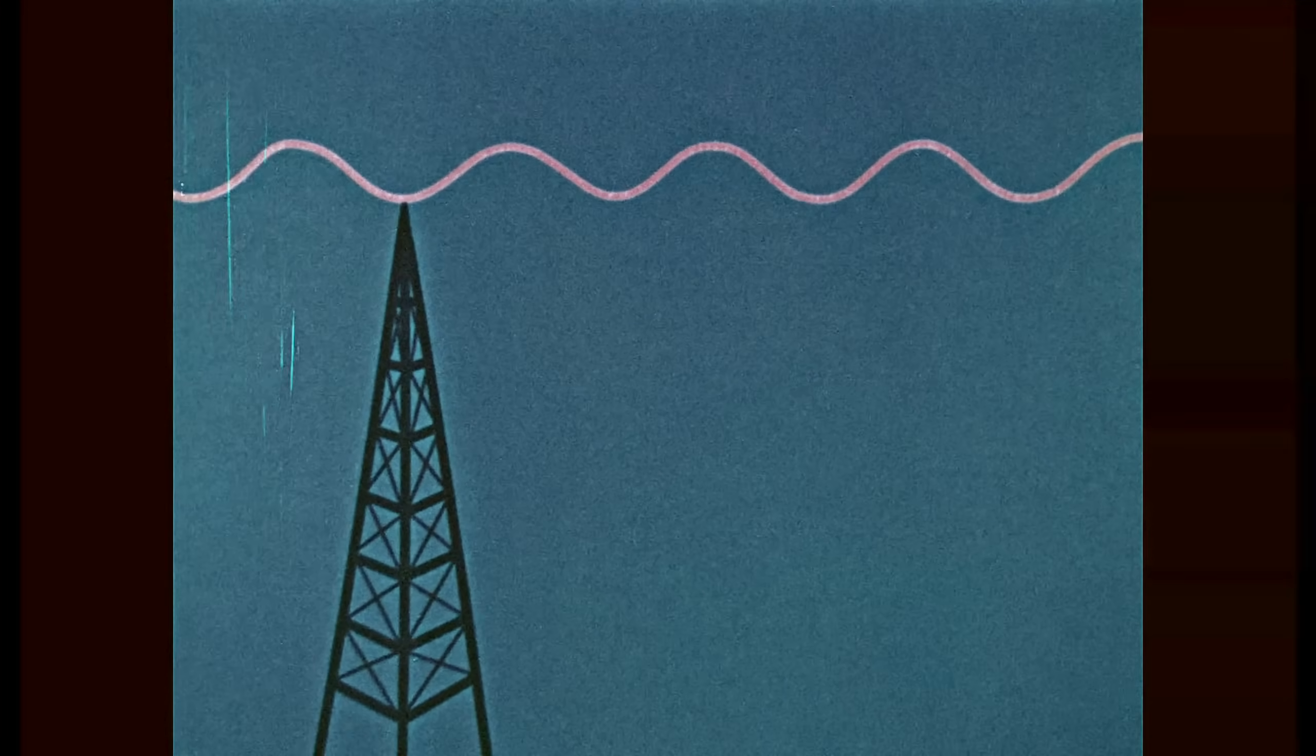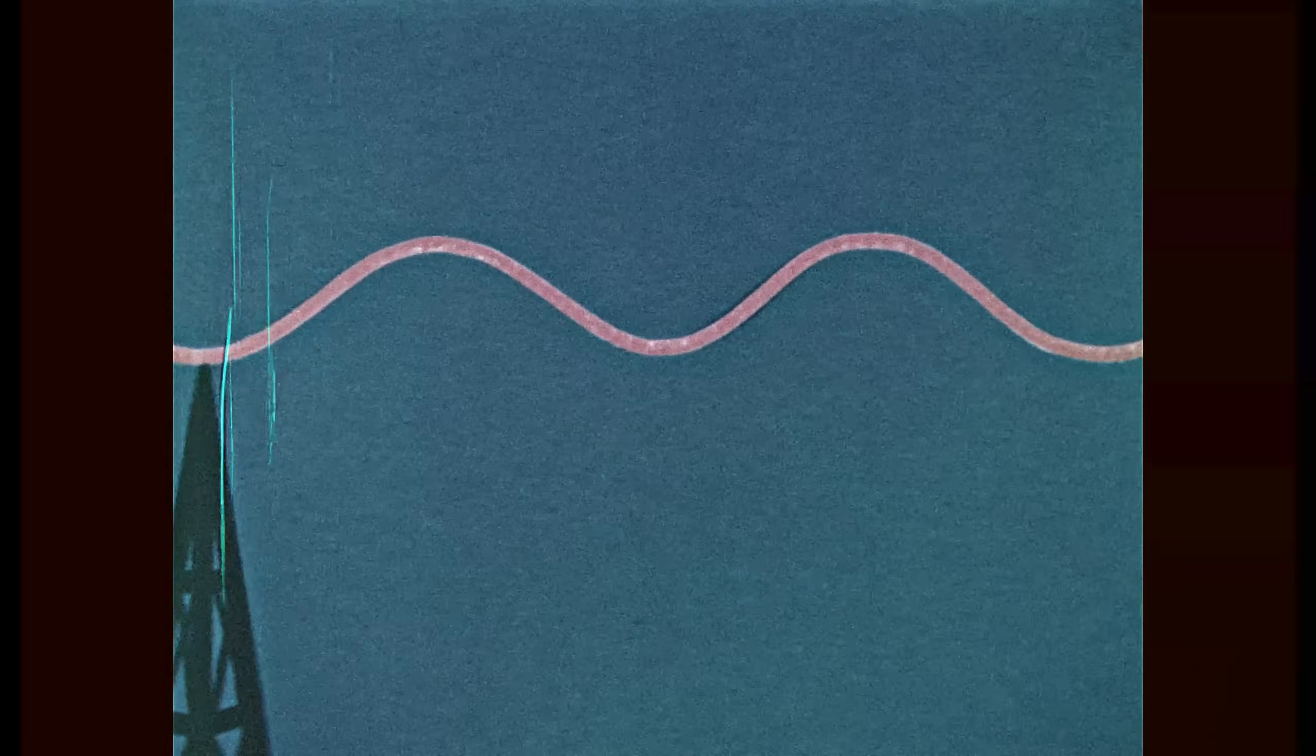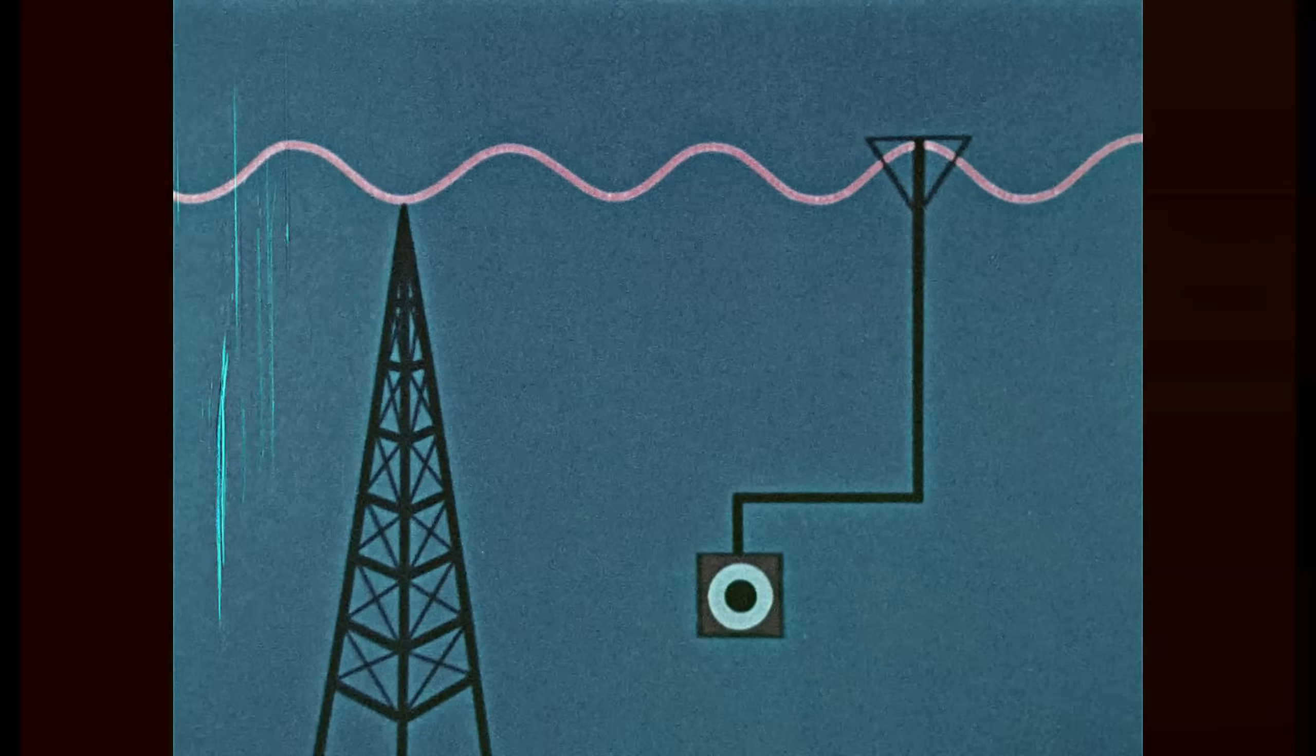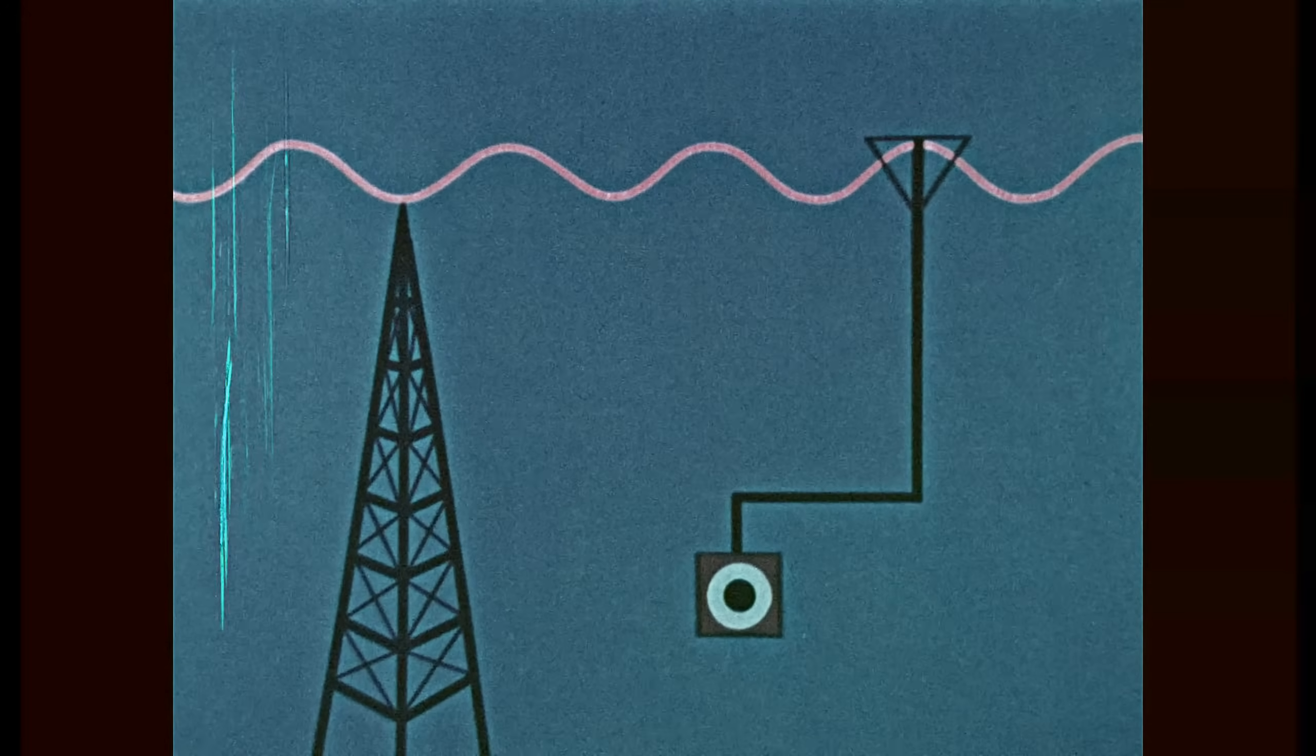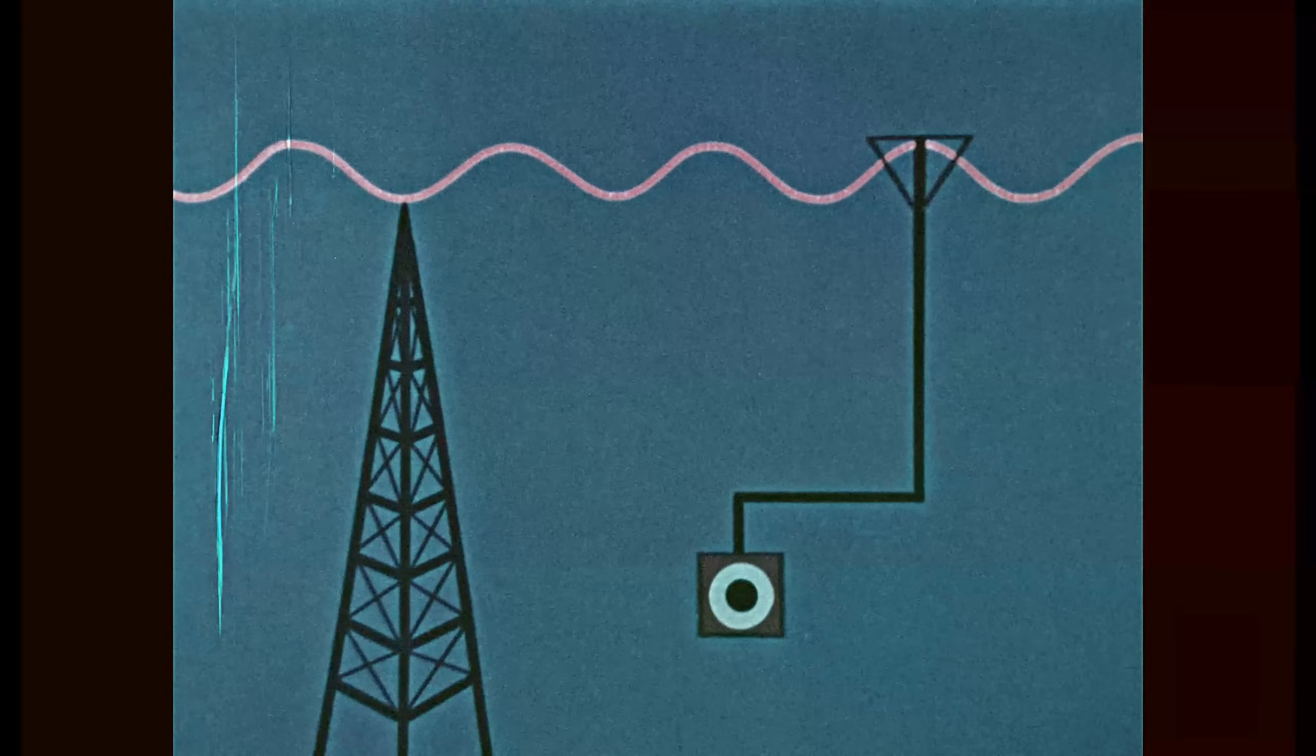The transmitting antenna of a radio station sends out radio waves of a fixed frequency. The receiving antenna must pick up as much energy as possible from these waves. The length of the antenna should ideally be half the wavelength of the transmitter frequency.